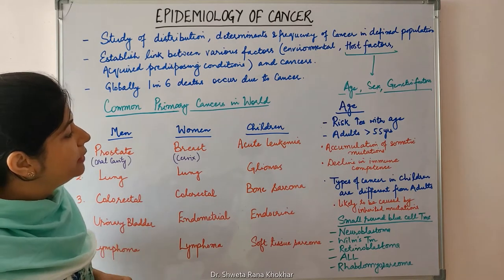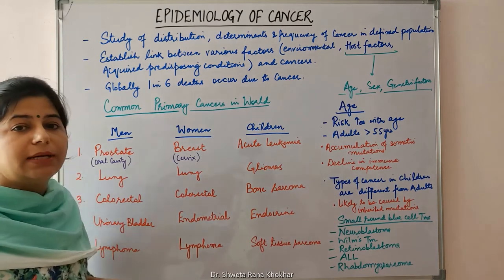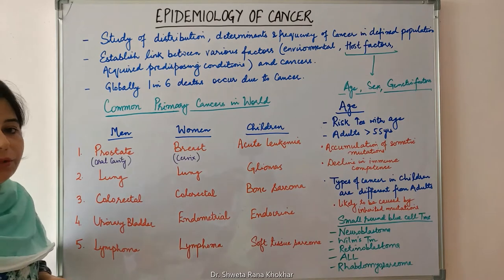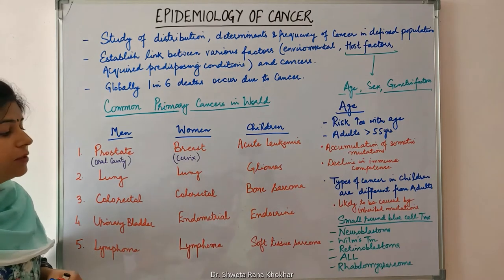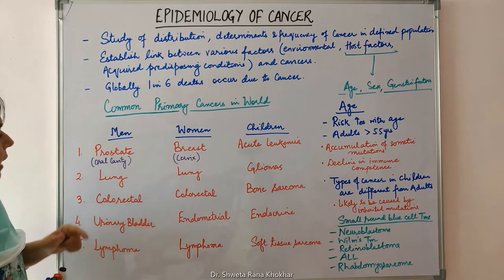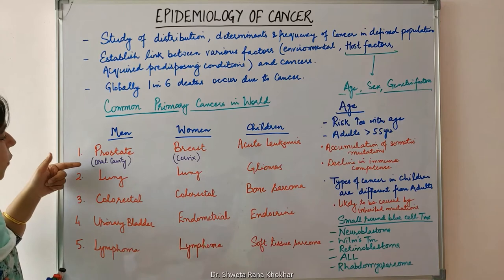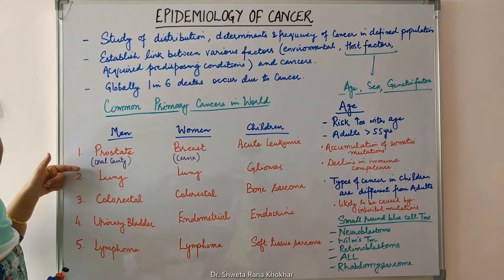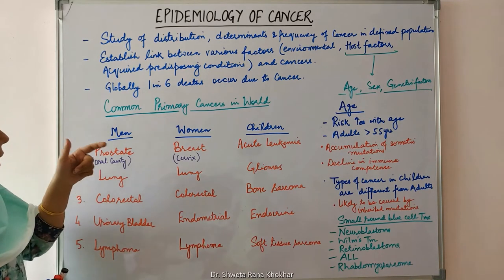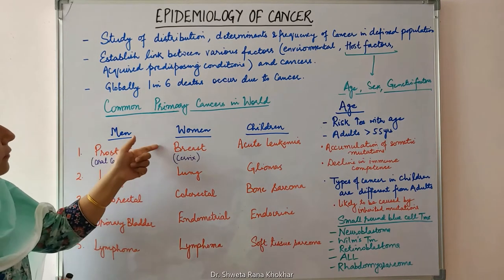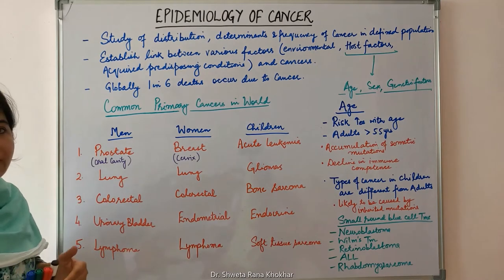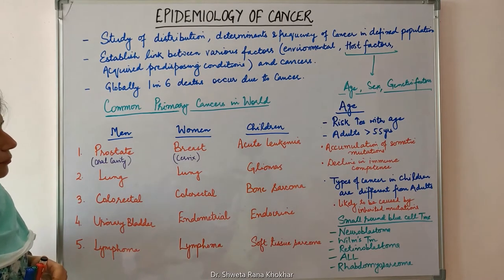In children, the most common cancers are acute leukemias, gliomas, bone sarcomas, endocrine tumors, and soft tissue sarcomas. In India, oral cavity cancers have high incidence in men, and carcinoma cervix has high incidence in women.